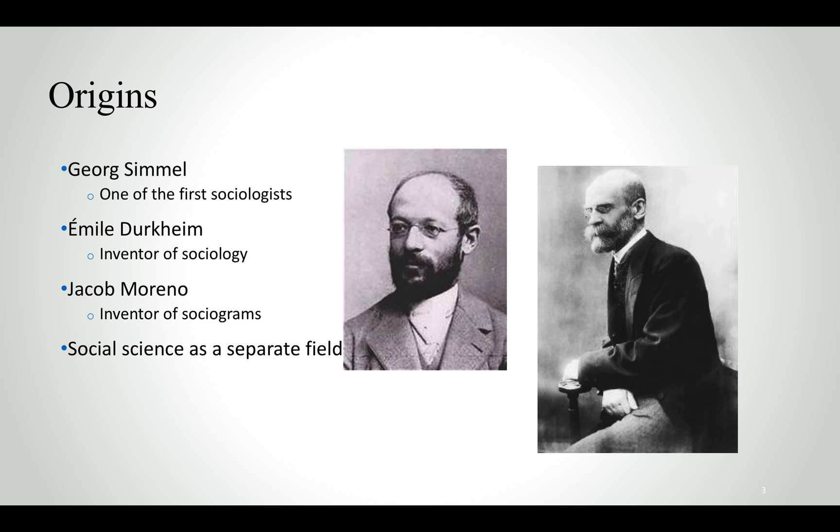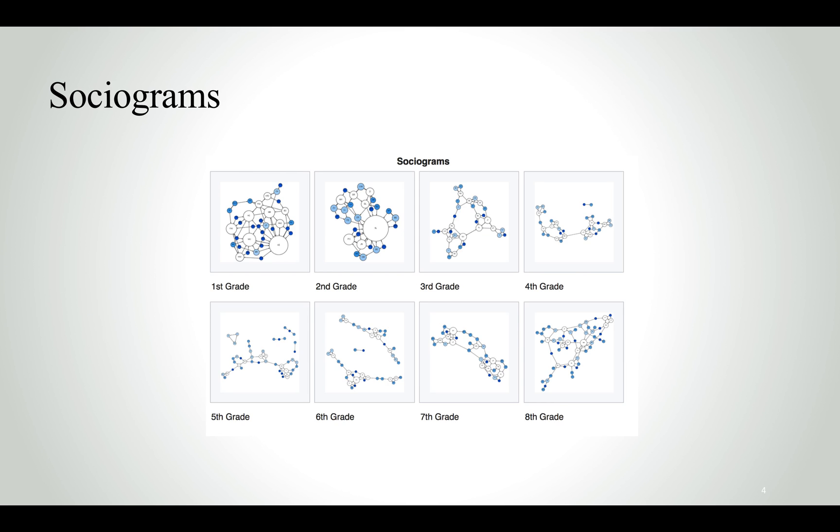The origins of social network analysis lie within the origins of social science itself. People such as Georg Simmel, Dirk Heim and Jacob Moreno were among the first scientists that created the field of sociology and came up with the first descriptions of what is now called social network analysis. The initial idea was called a sociogram.